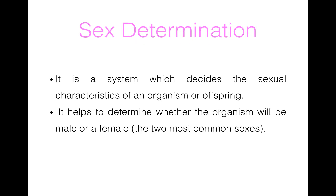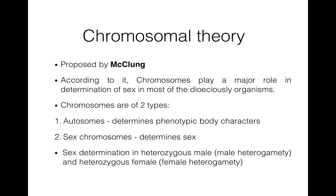What is sex determination? It is a biological system which decides the sexual characteristics of an organism or offspring. It helps to determine whether the organism will be male or female. The Chromosomal Theory was first proposed by McClem. According to this theory, chromosomes play a very important role in the determination of sex in most dioecious organisms.